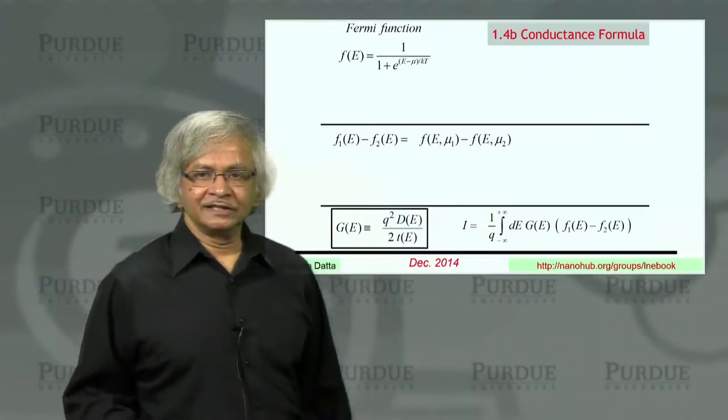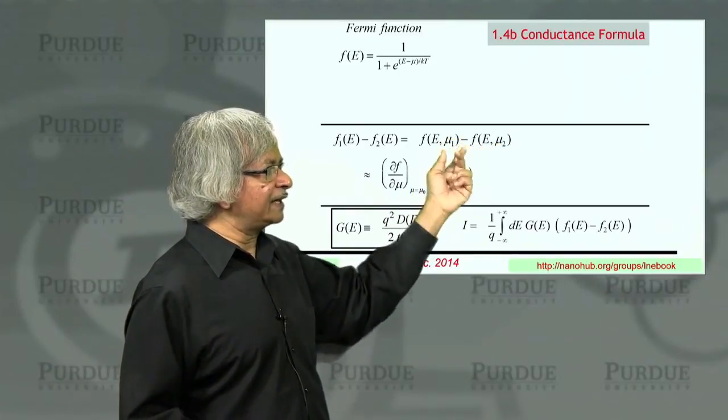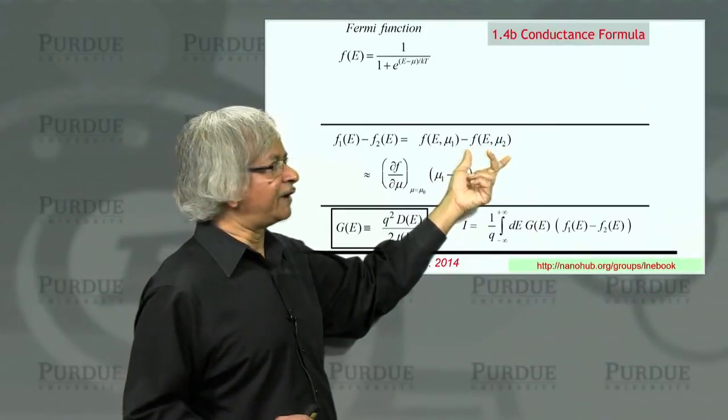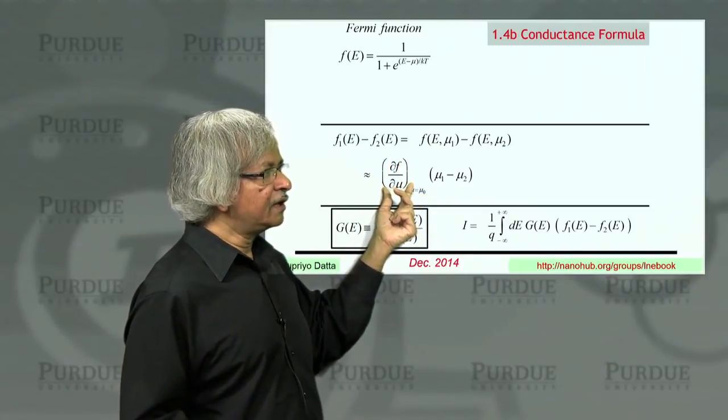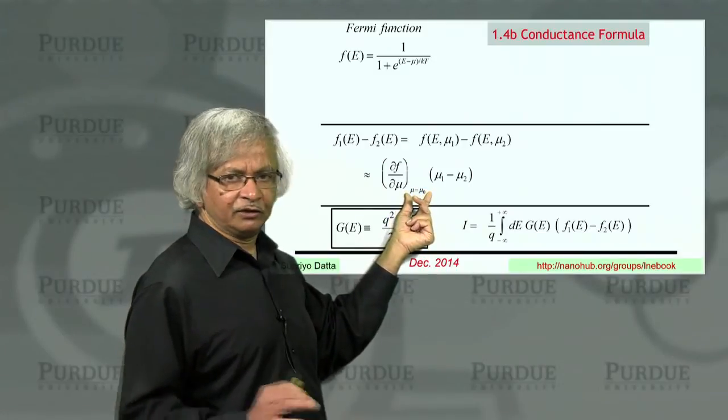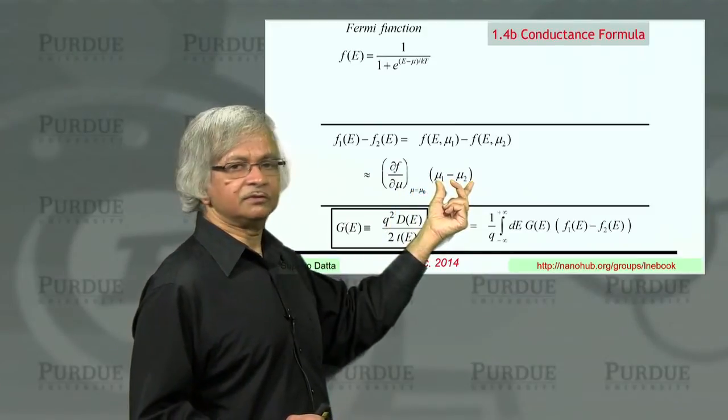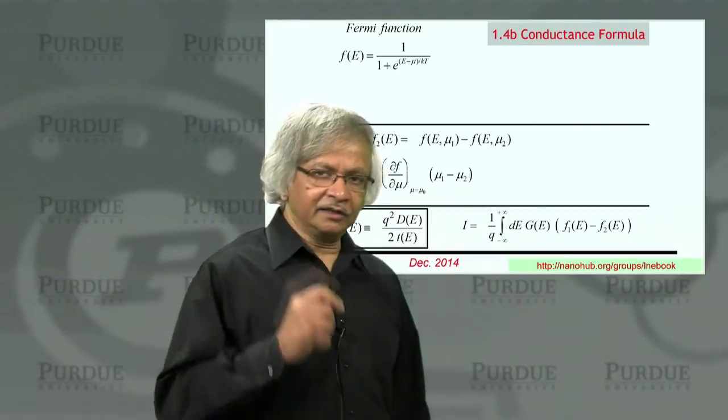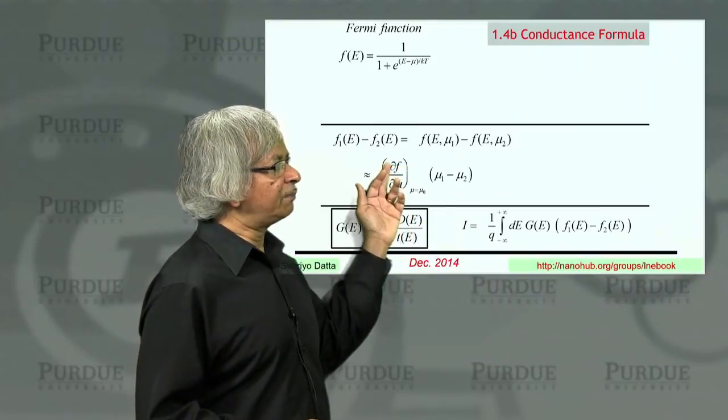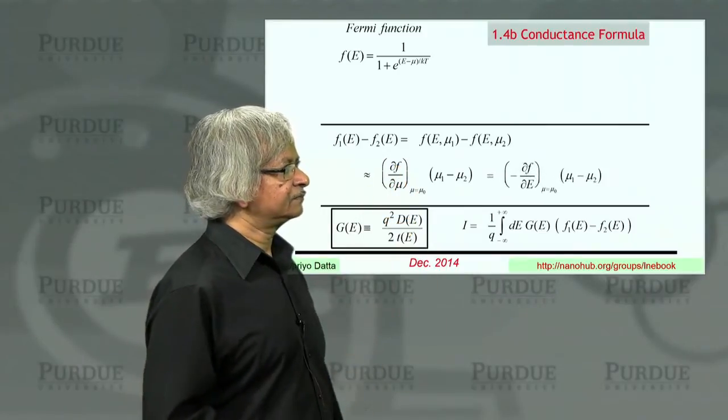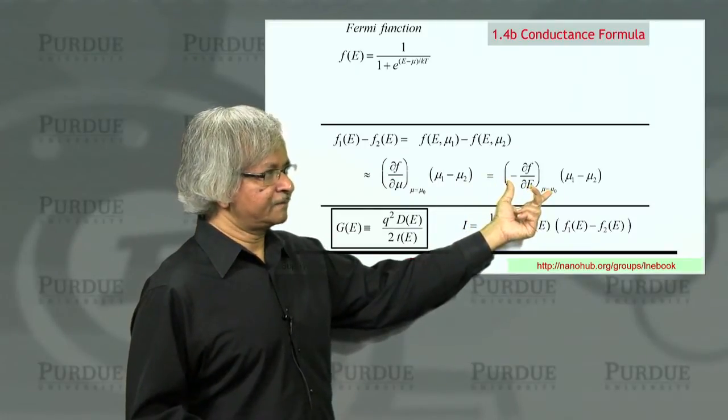Now, what you can do is this Taylor expansion. You could write the difference between these two, assuming that μ1 and μ2 are not too different. You can write this difference as the derivative, partial of f with respect to μ, evaluated at the average value. μ0 is the average of μ1 and μ2. So at that value, whatever it is, times μ1 minus μ2. Now, what takes a little thinking, and I'll explain that in a minute, is that partial of f with respect to μ is actually equal to the partial of f with respect to energy. So instead of del f del μ, we can write minus del f del E. So let me explain why.